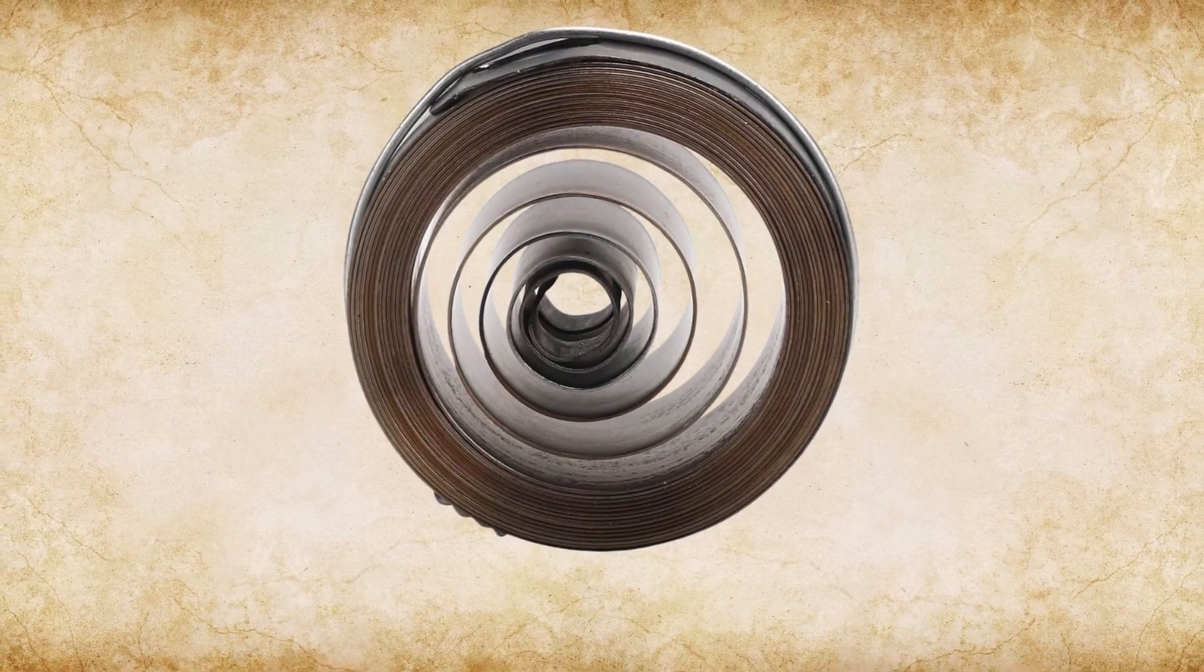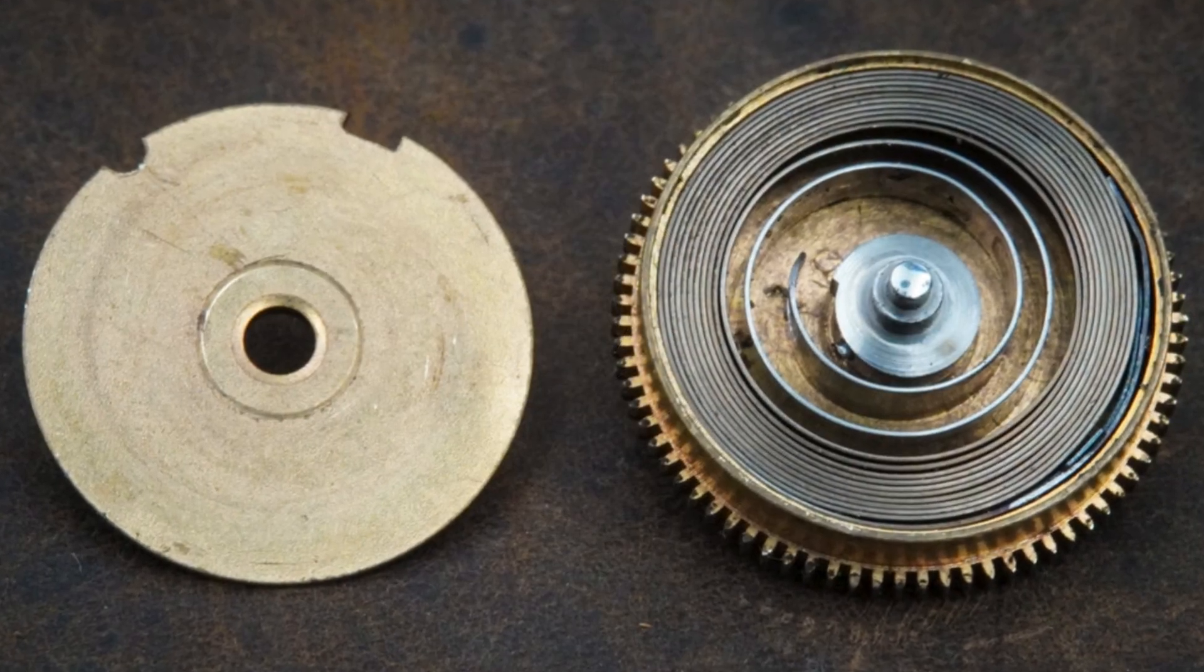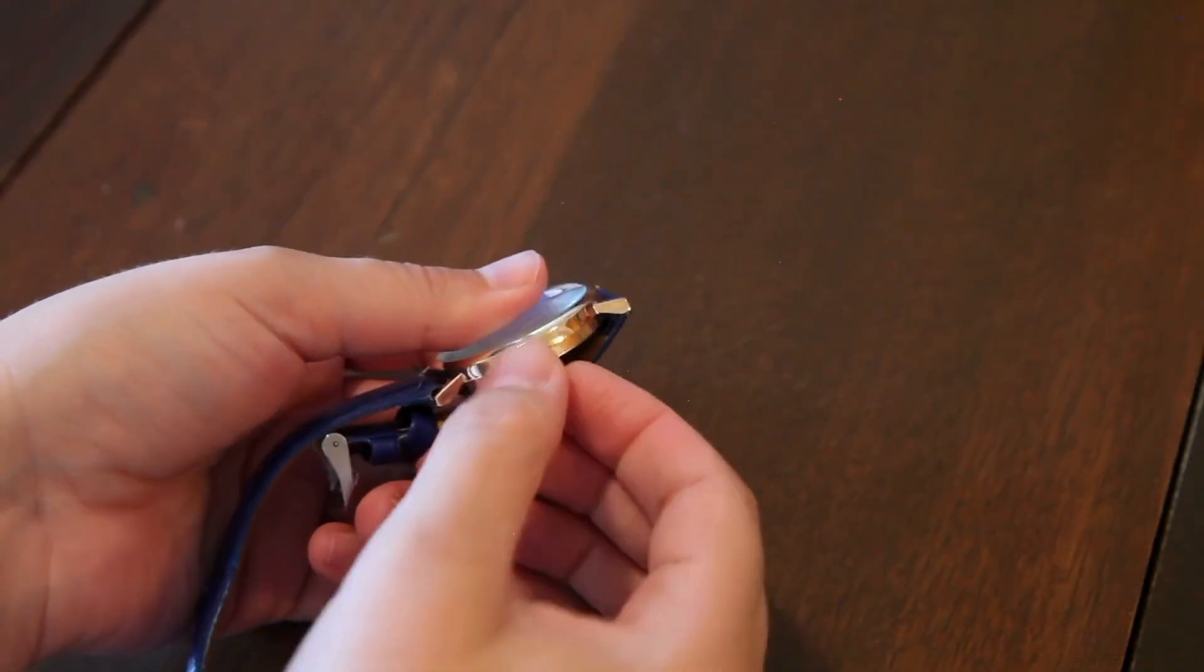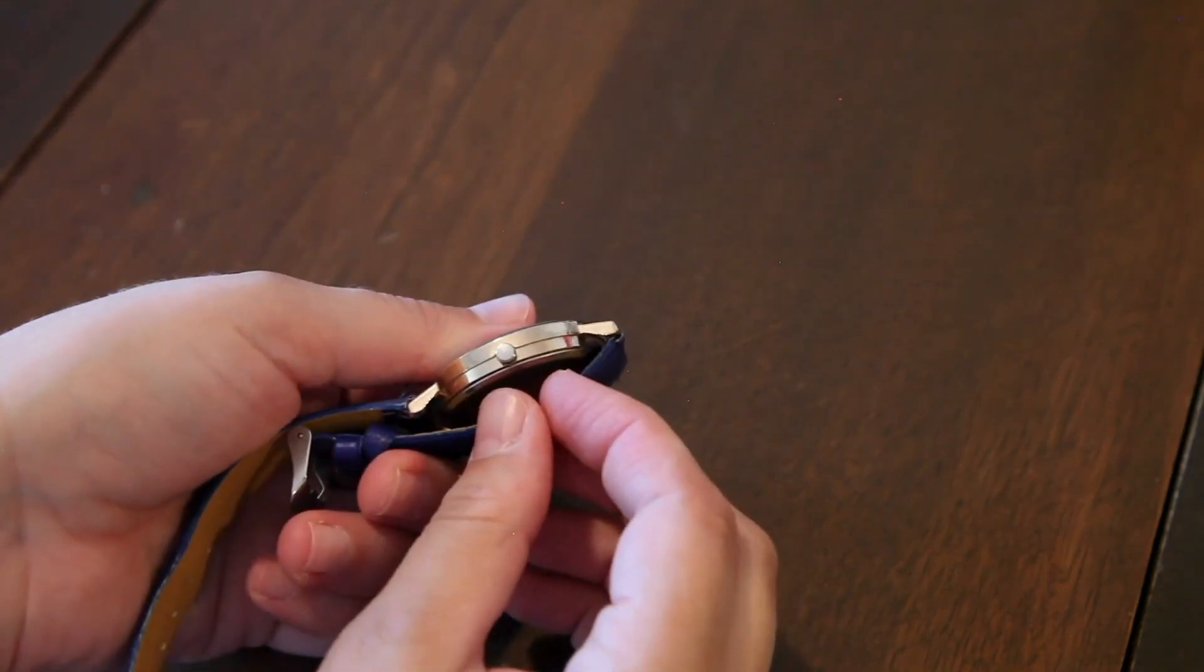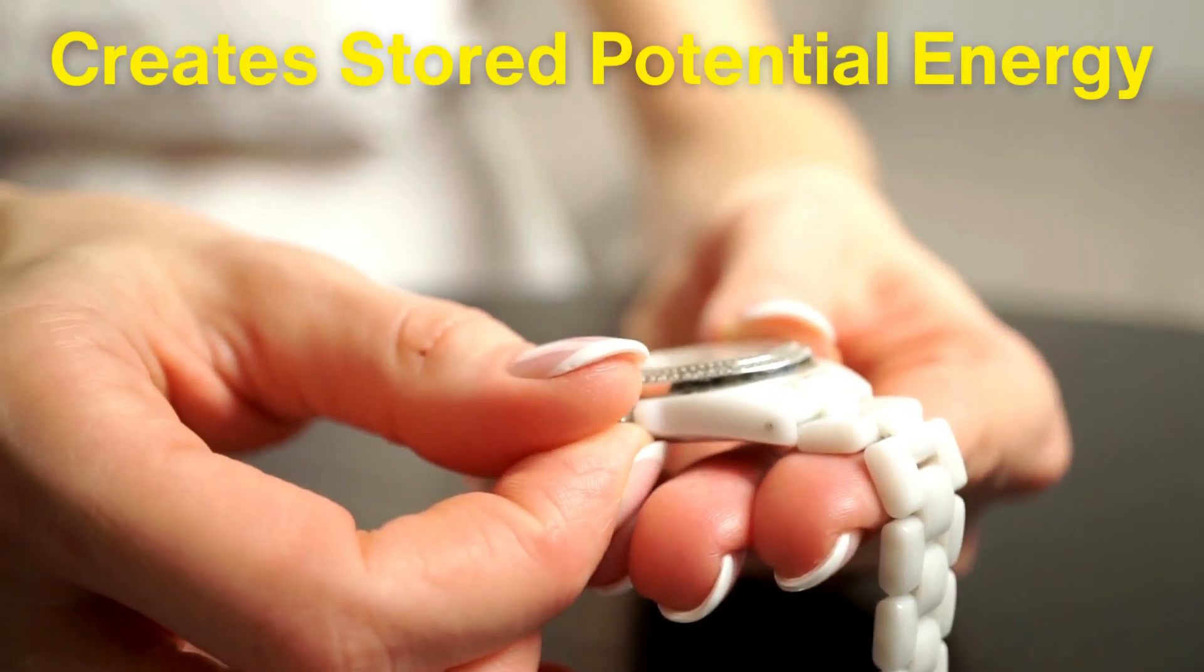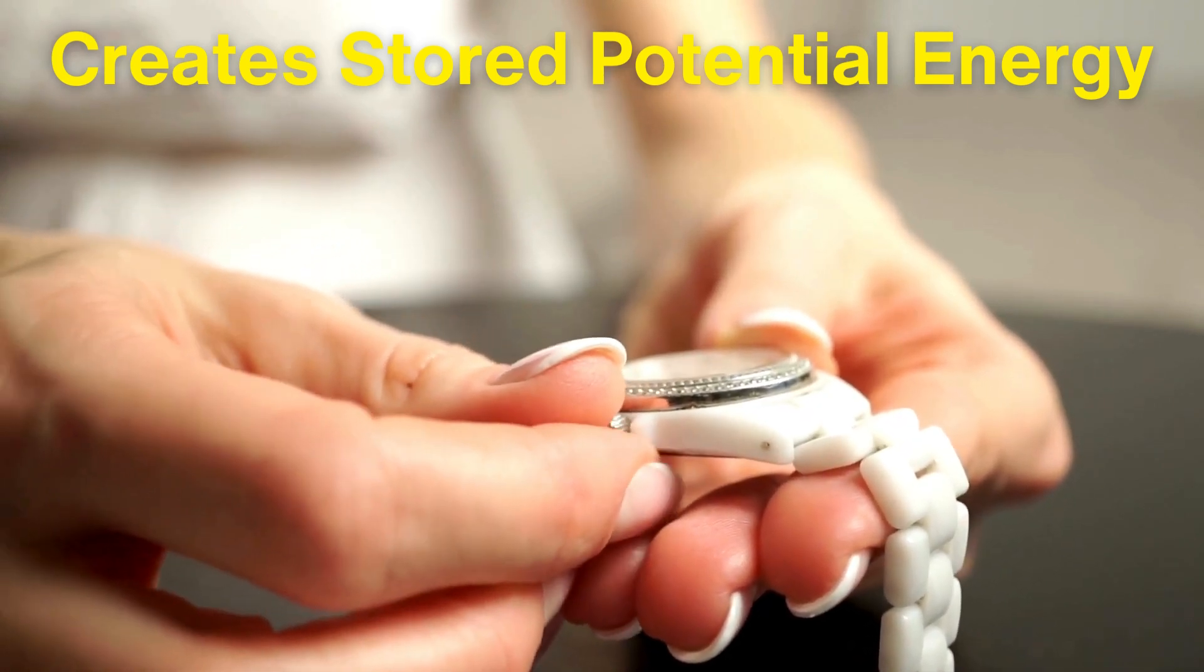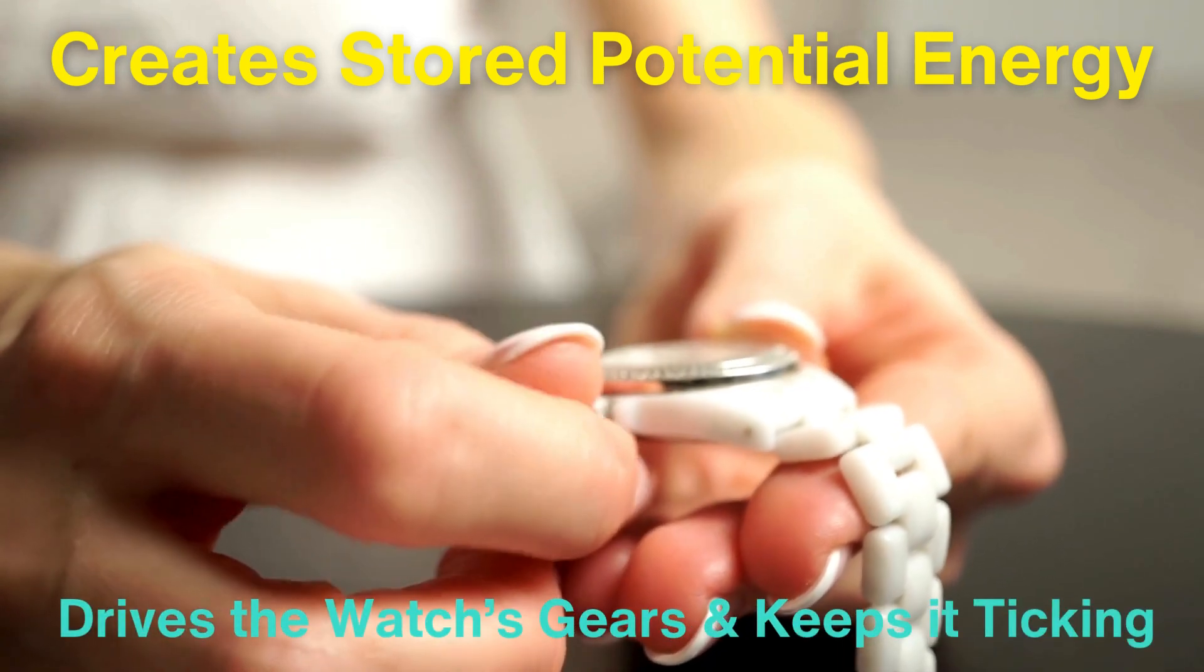The core of the mechanical watch's power source is the mainspring. The mainspring is a tightly wound strip of metal housed in a barrel. When you wind a mechanical watch, either manually by turning the crown or automatically through a rotor in self-winding watches, you tighten the mainspring. This creates stored potential energy. The mainspring slowly unwinds over time, releasing this energy in a controlled manner. This is the energy that drives the watch's gears and keeps it ticking.